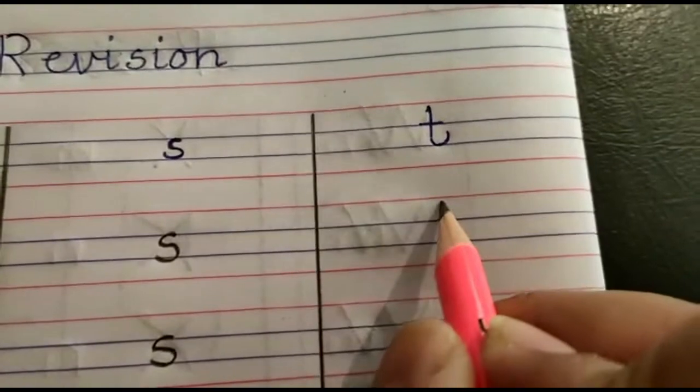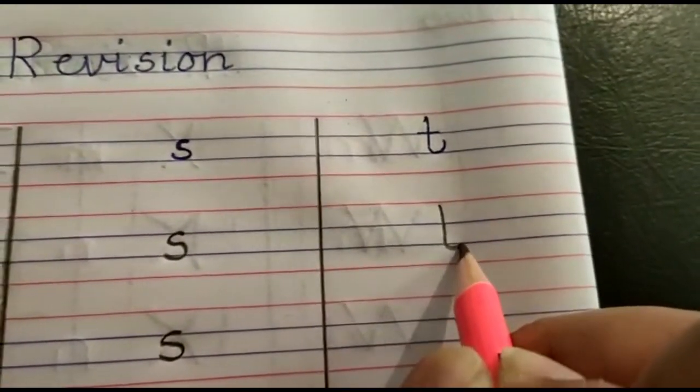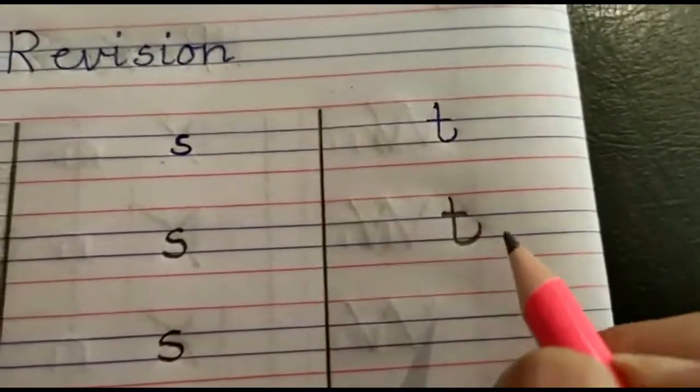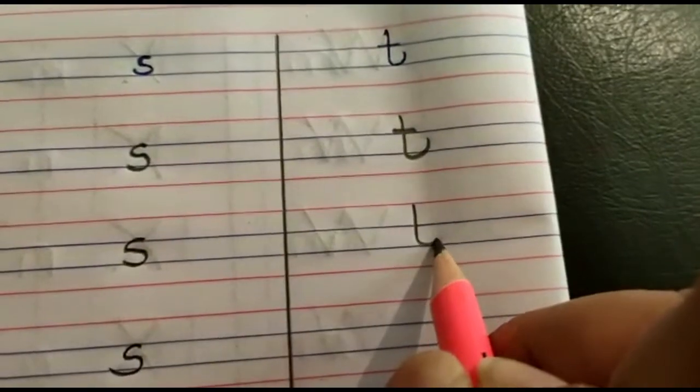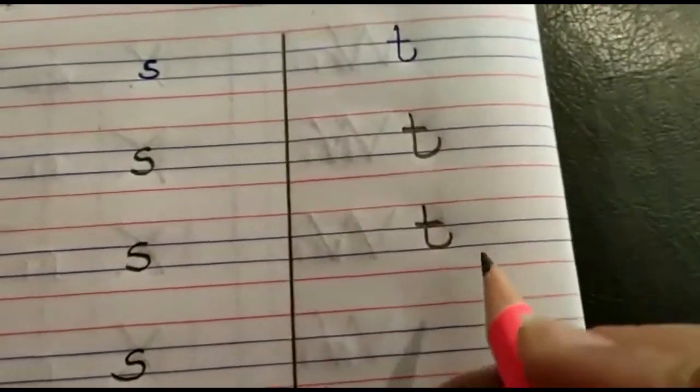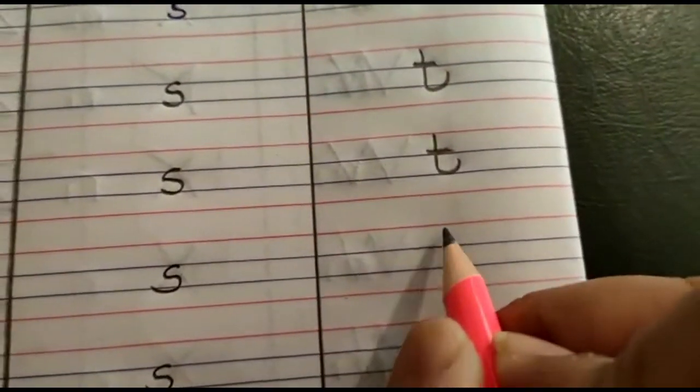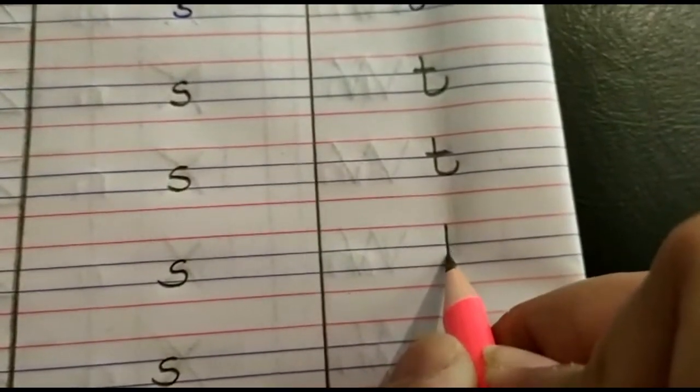coming to letter T. T says T. Come on, start from the red line, come down and take a bumper T and a sleeping line. T says T. Again, start from the red line, go down to the blue line, bumper T and sleeping line. T says T.